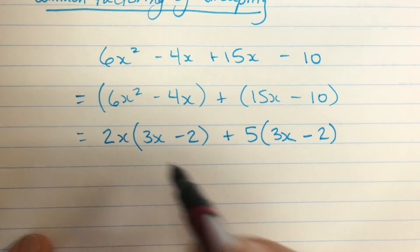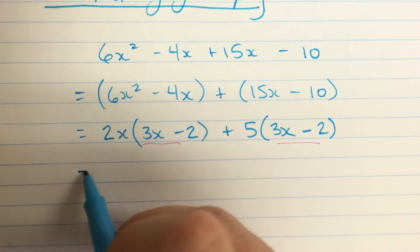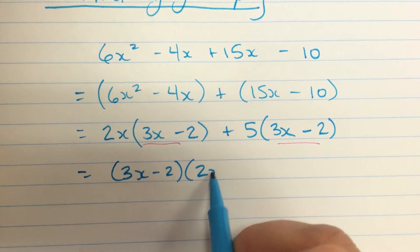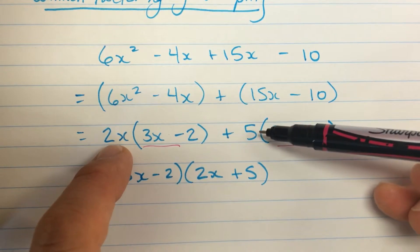And check it out. I have a binomial factor in common, which is what we were just doing. So that's nice because I can factor it out and be left with 2x plus 5. Those are the two bits that I hadn't used yet.